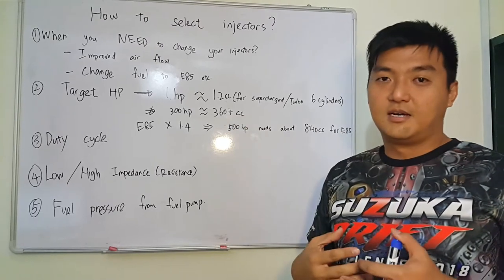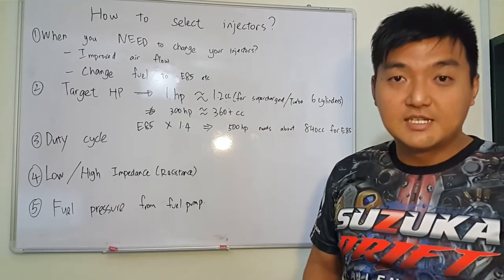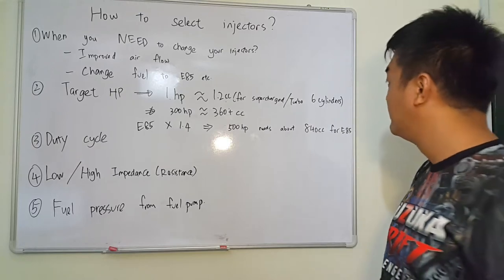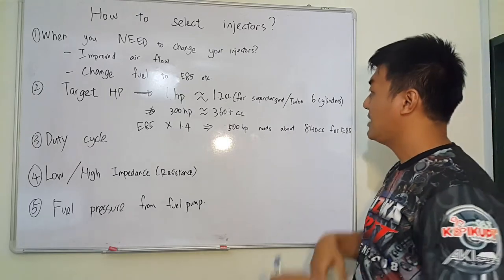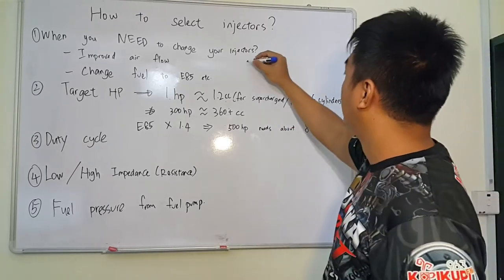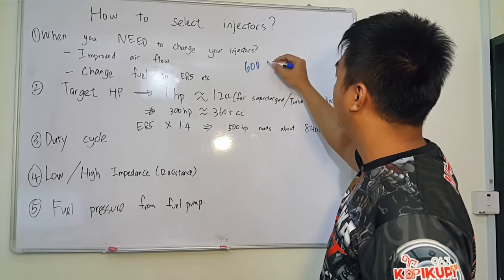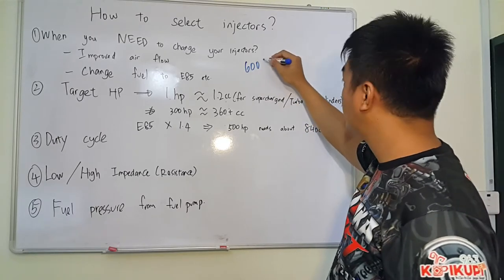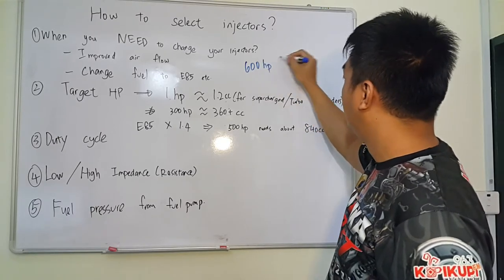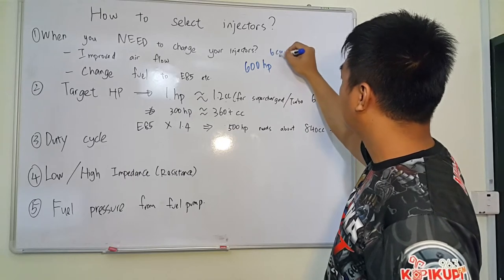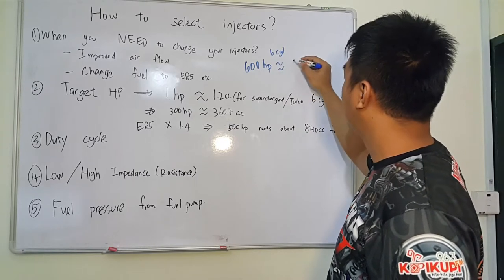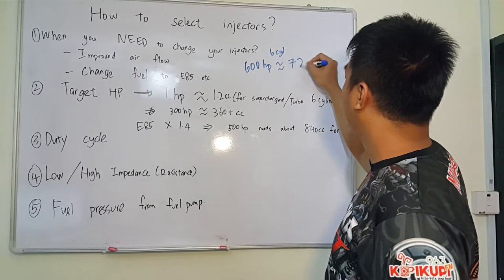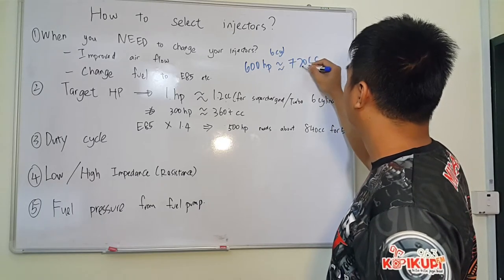So you may ask, what about my 4-cylinder engine, what about my 8-cylinder engine? Let's take an example. If I target 600hp on a 6-cylinder engine, then I will need about 720cc injectors each.